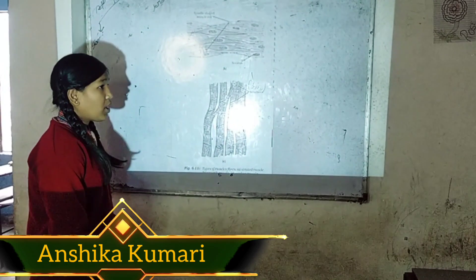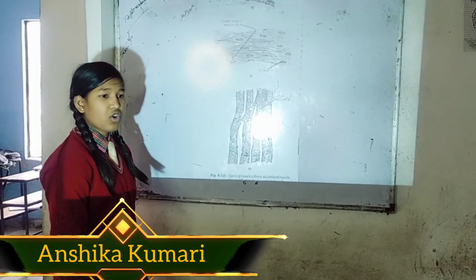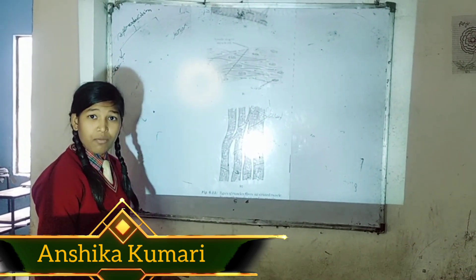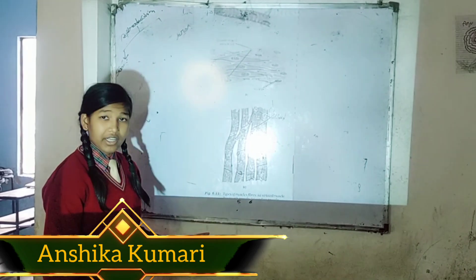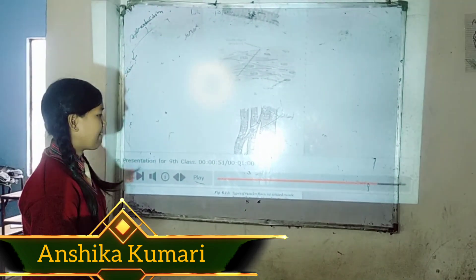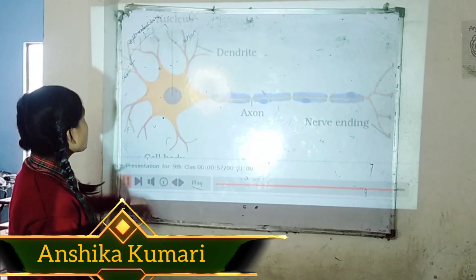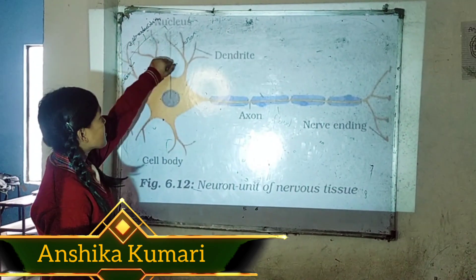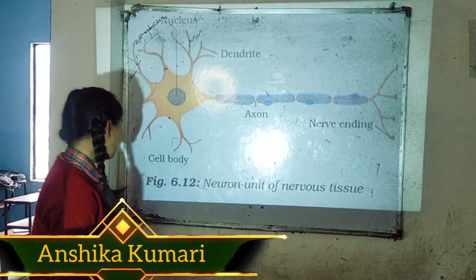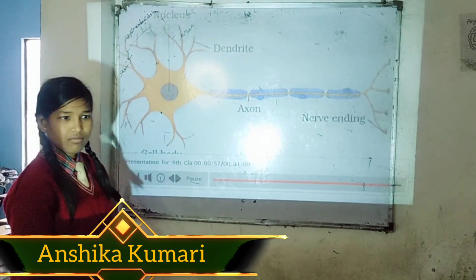Voluntary muscles are muscles we can control and stop when we choose. Involuntary muscles are muscles we cannot stop voluntarily. Nervous tissue consists of a nucleus, dendrites, and axons — as shown in figure 6.12, neurons are the units of nervous tissue.